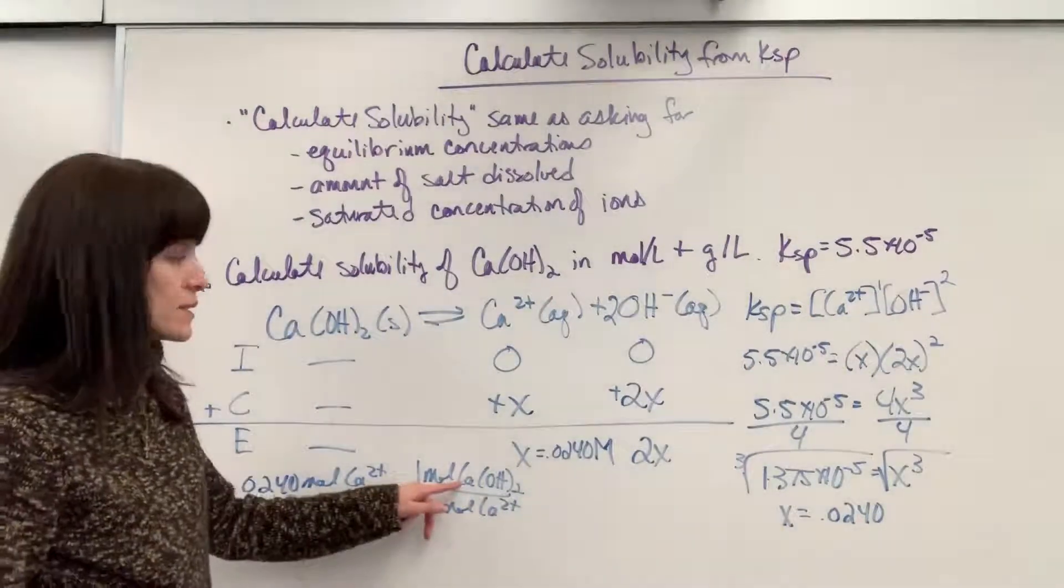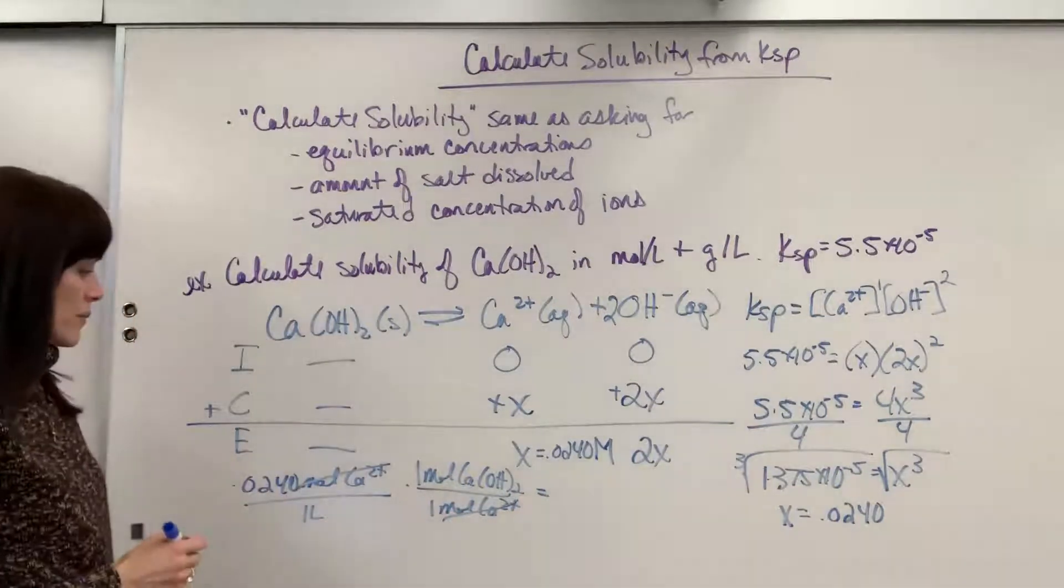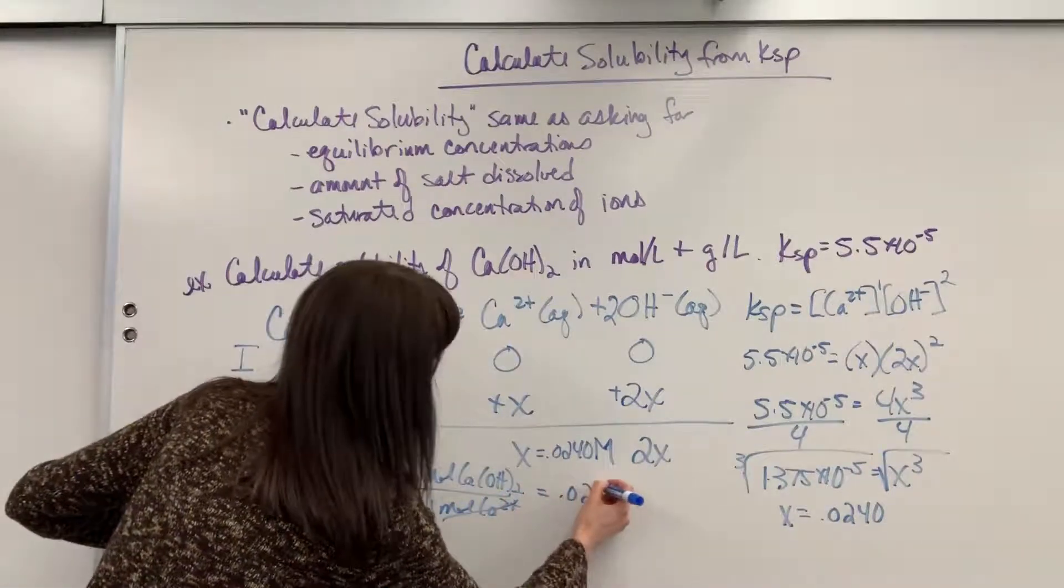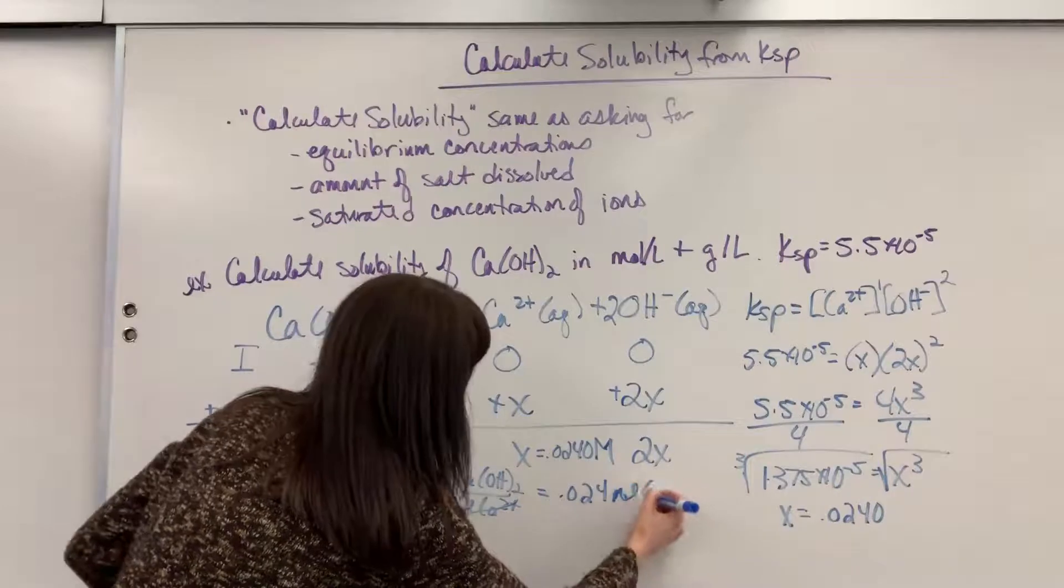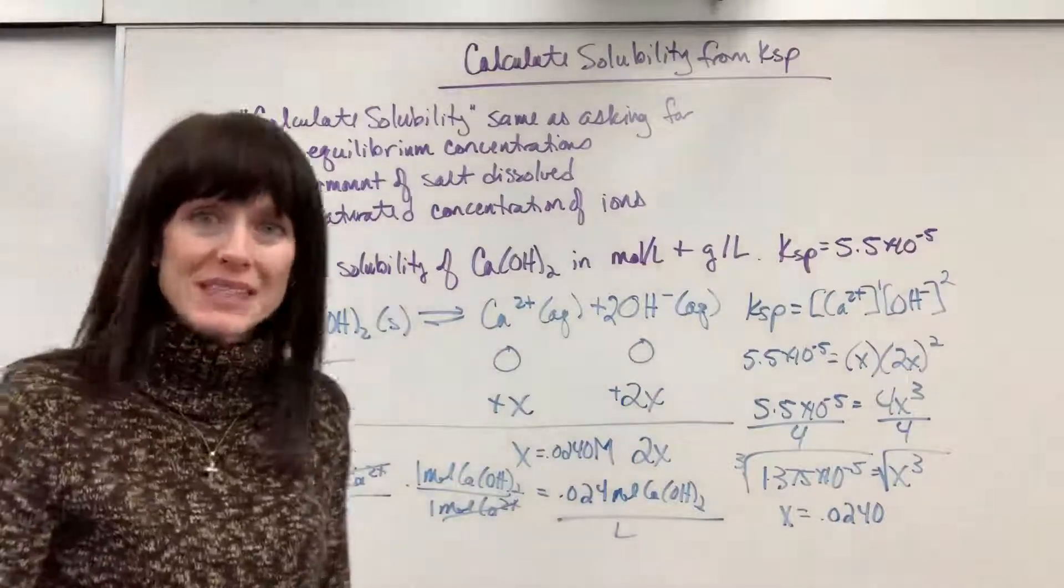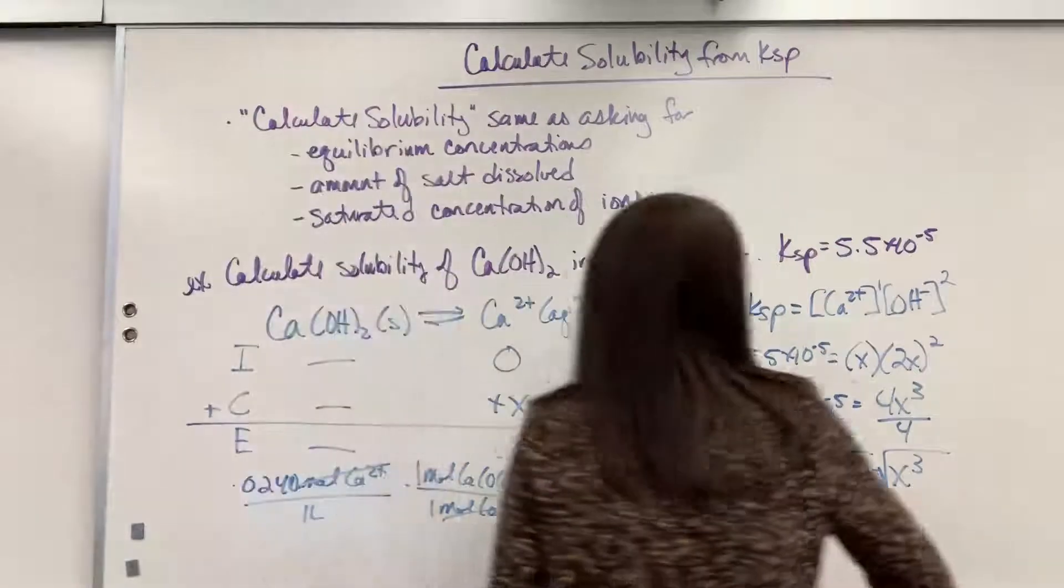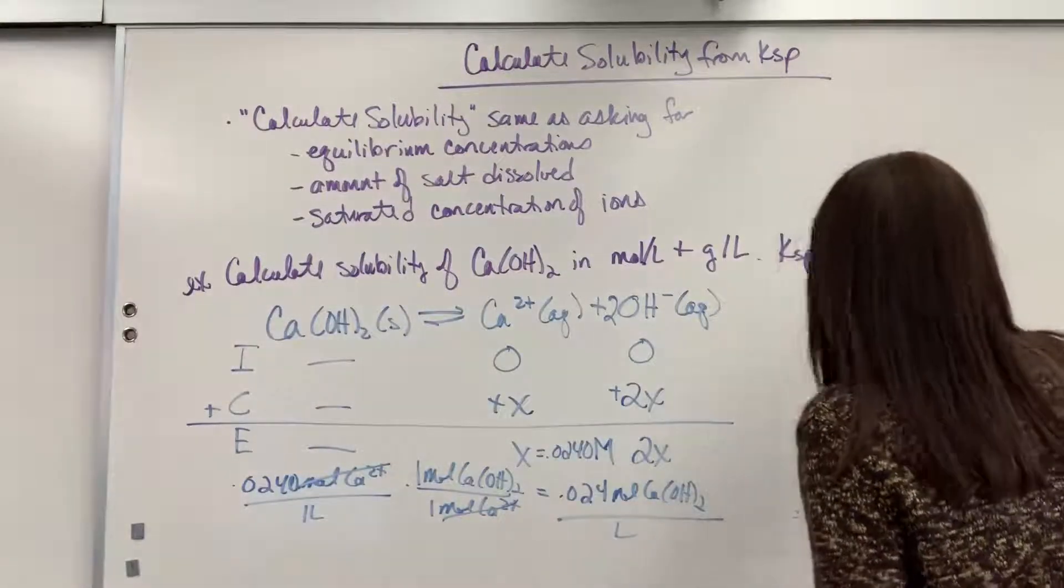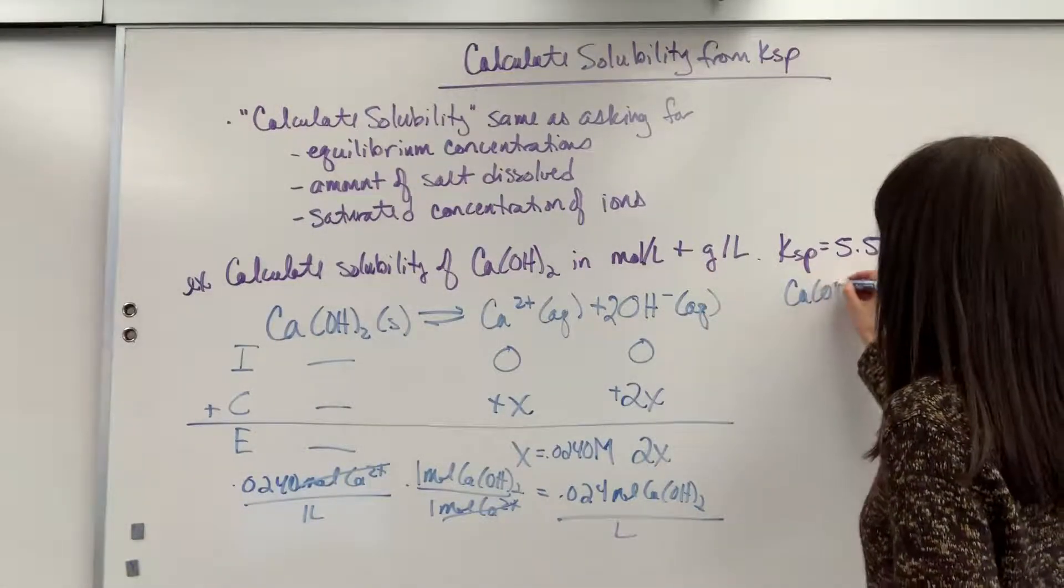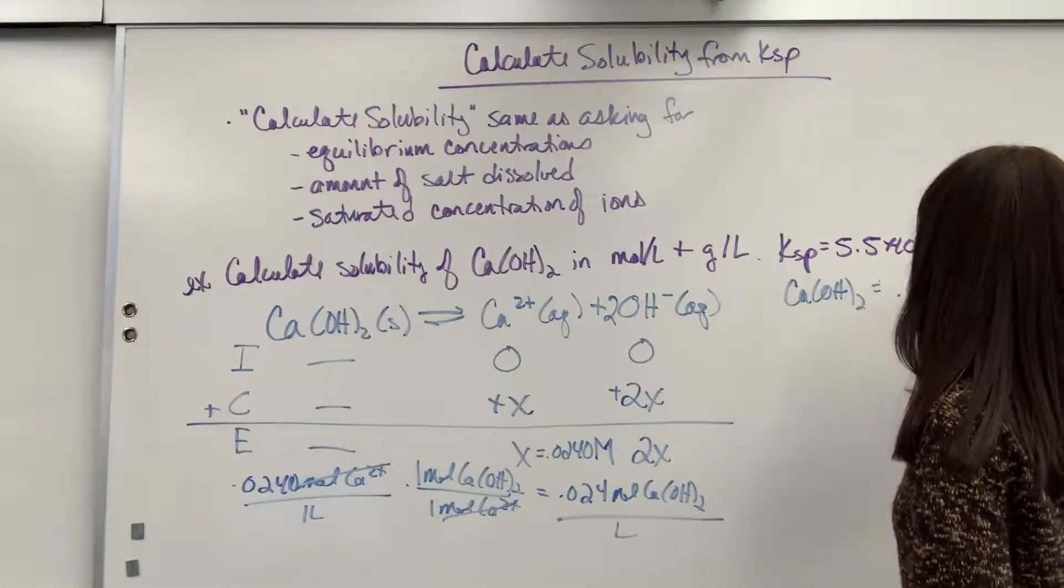Let me prove that to you though with stoichiometry. I could take 0.0240 moles of calcium ion for every one liter, and then one mole of calcium ion came from one mole of calcium hydroxide. There's one mole of calcium inside of the calcium hydroxide. And if we do that math, moles of calcium cancel out and we will end up with 0.024 moles of calcium hydroxide divided by a liter. It's the same thing, 0.024 molar calcium hydroxide.